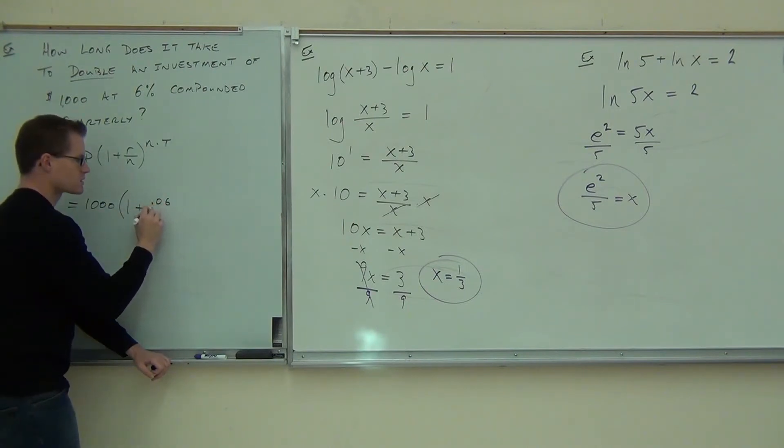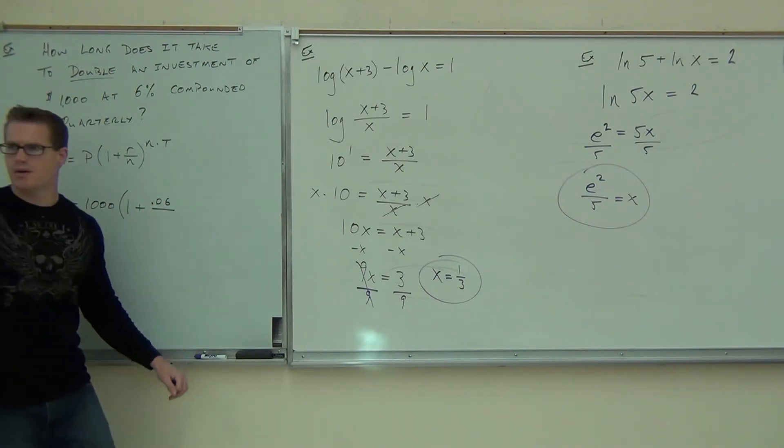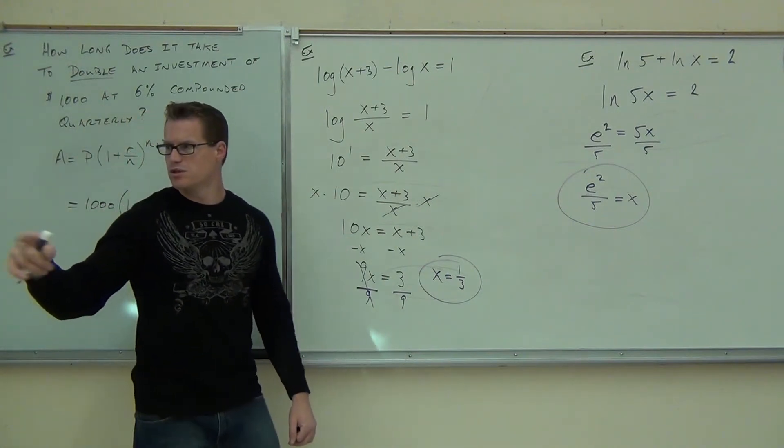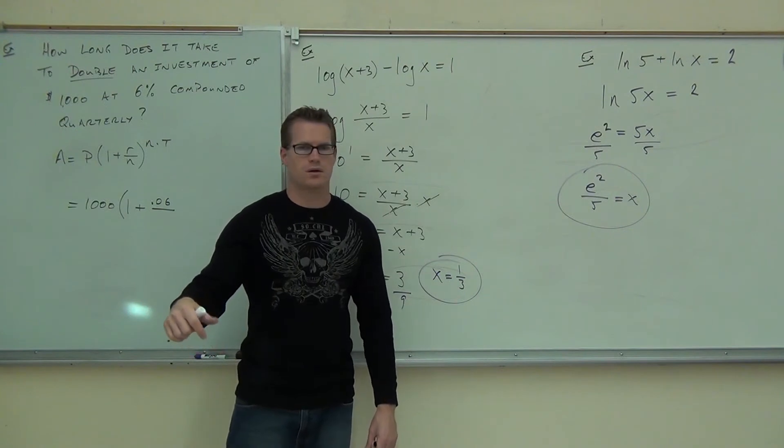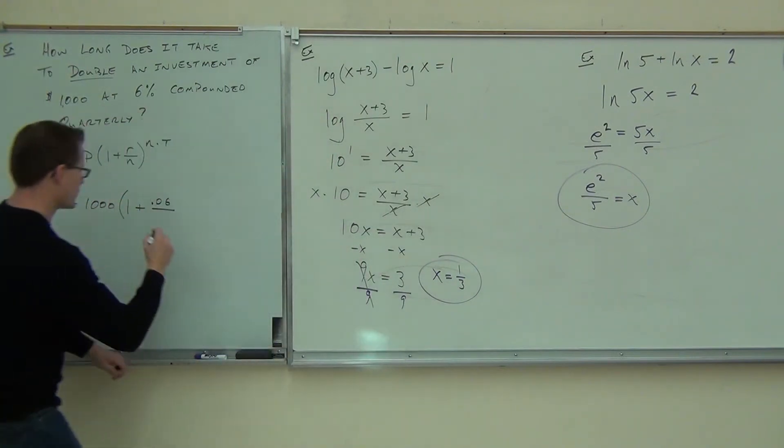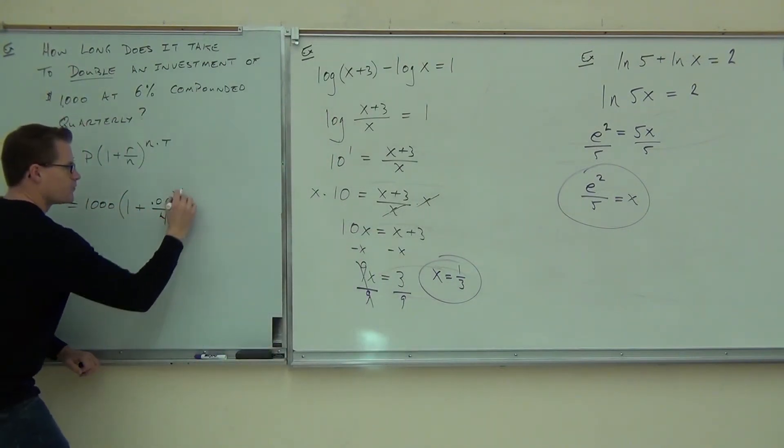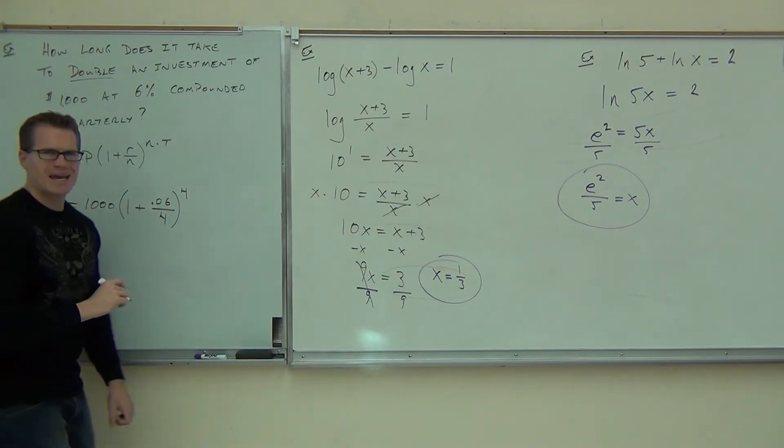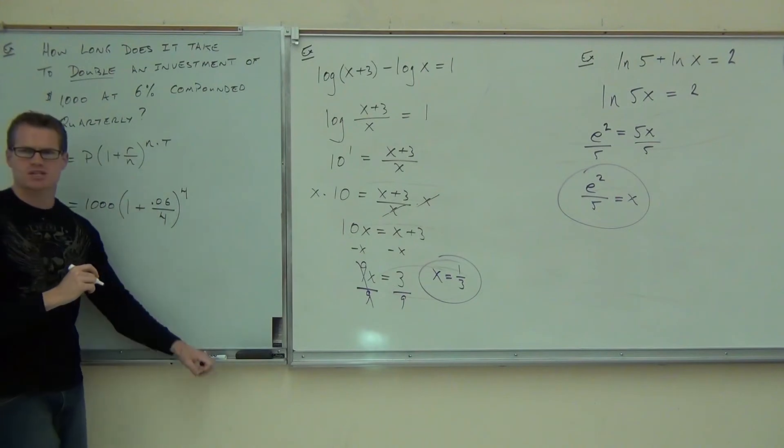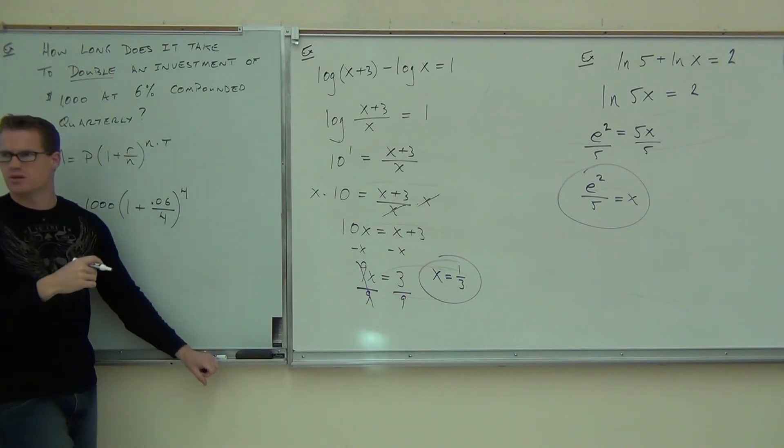0.06 over... How many compounds do we get out of this particular example? Four. Why? Where are you getting the four? Quarterly means four. Good. Four goes here. Four also goes here. These numbers are tied together. They're the same number. How about T? How much T do we get? How much years is this? X.